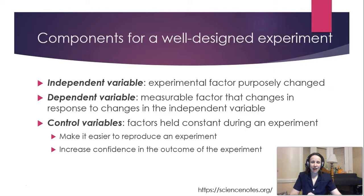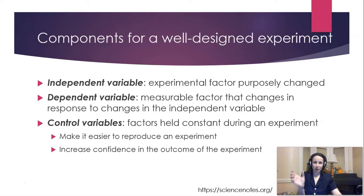So how do I design a good experiment? In order to know how to design a good experiment, you need to understand some basic definitions which you will need to apply in your experimental design. An independent variable is the experimental factor that is being changed on purpose. The easiest way to state a hypothesis is: if I do something, then something will change. Your independent variable is effectively what you are doing — it's the 'if' part of your statement.